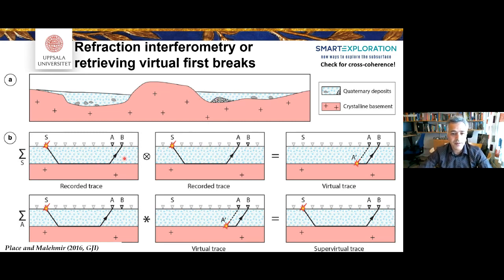And the way it worked is you basically have a shot record that is recorded in these two traces A and B. You cross correlate them and you get what we say a virtual trace. And if you then convolve your virtual trace with the shot at location A, you basically produce a super virtual trace at location B. And for the number of shots and receivers, for example, recorded there, you can stack them in order to improve the quality of your first break. And this is exactly what we did.